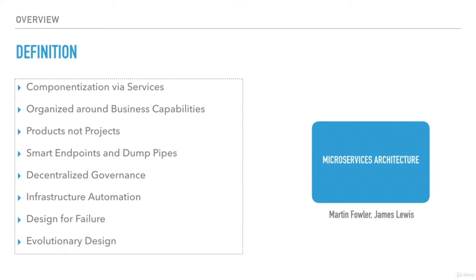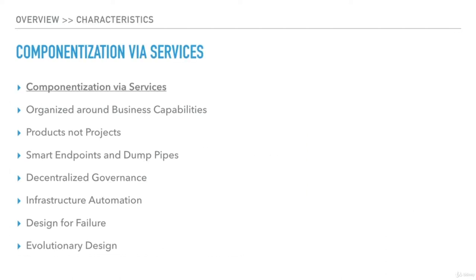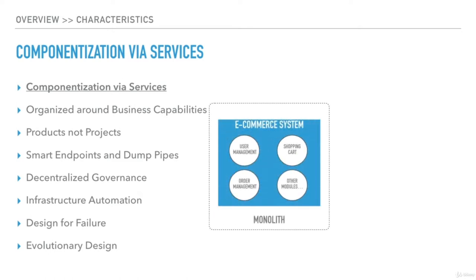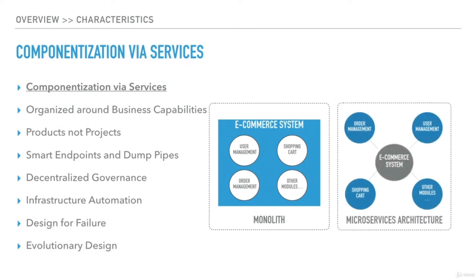Let's take a closer look at these characteristics. As discussed earlier, our monolith system can have multiple modules stitched together — in an e-commerce system, modules could be user management, shopping cart, order management, etc. An equivalent microservices architecture should componentize each of these modules as independently deployable services. Componentization in the form of libraries will not work here. So in our e-commerce system, we should develop each component — order management, user management, shopping cart — as independent services.